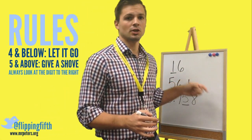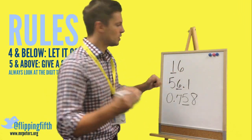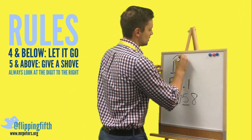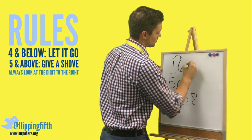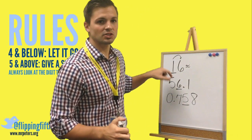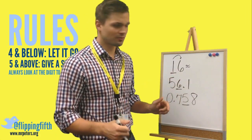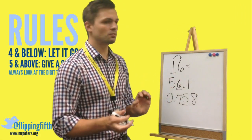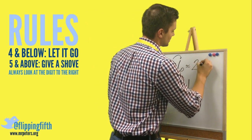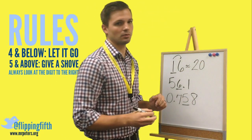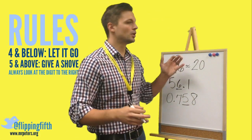We have the number 16. The digit one is in the tens place. We look to the six — following the rule, five and above you give a shove. Six is above five, so we're going to give the one a shove and make it a two. That six then becomes a zero, because it's a whole number and everything after the rounded digit needs to be a zero.